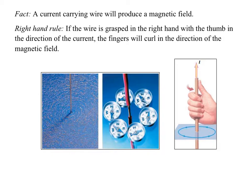When you physically look at a wire that carries a current — notice the insulation in the middle is removed here — the actual compass needle also shows you the direction. If you look at all the north poles of this compass, these are all little north poles, they're all facing in a counterclockwise direction. So the current going upward causes your fingers to curl around this way, producing a magnetic field around the wire.